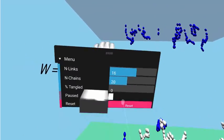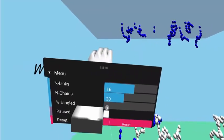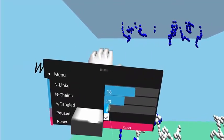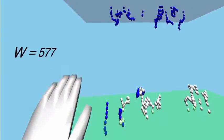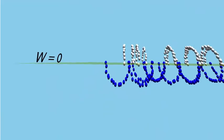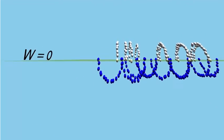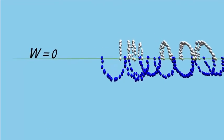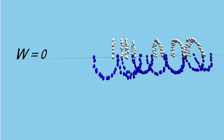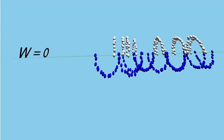That was intermingling. Now let's get entangled with a hundred percent tangles. I reset and now you can see I've got these loops of polymers, and mostly when we separate them they will get tangled with each other.